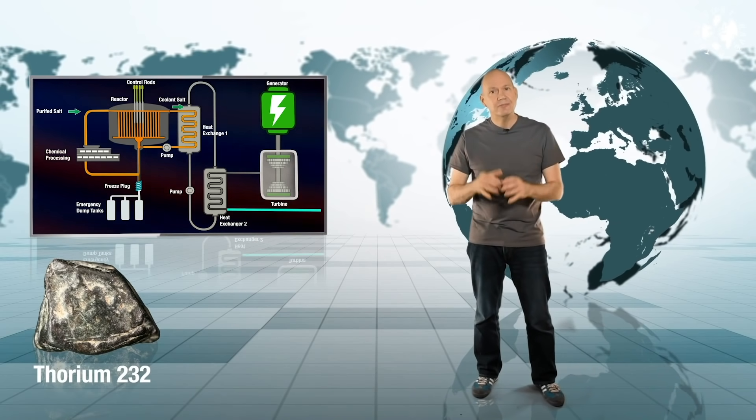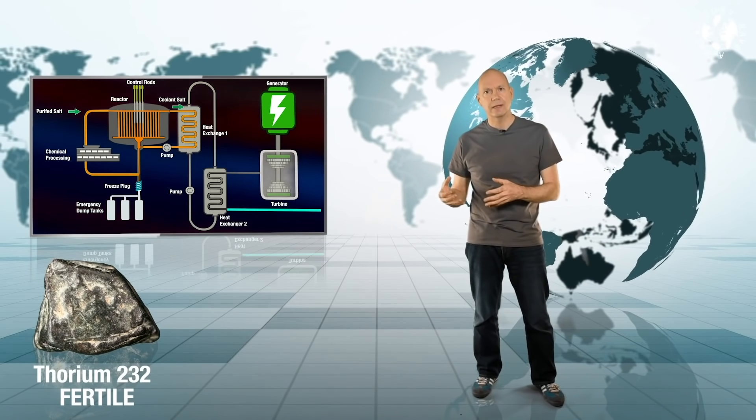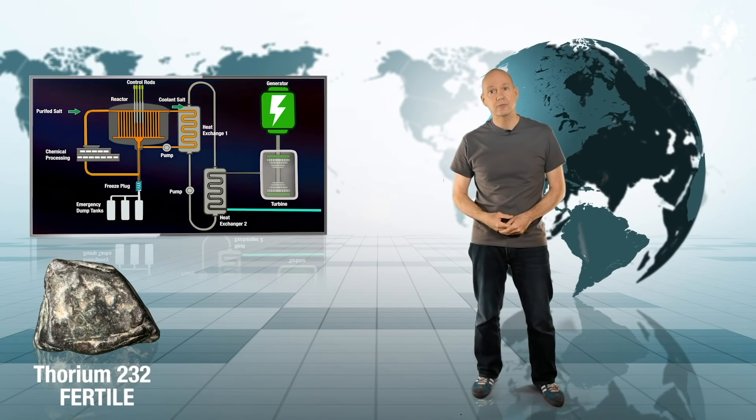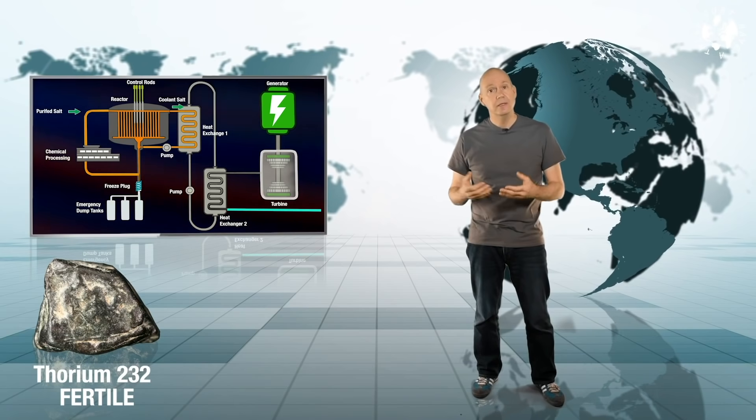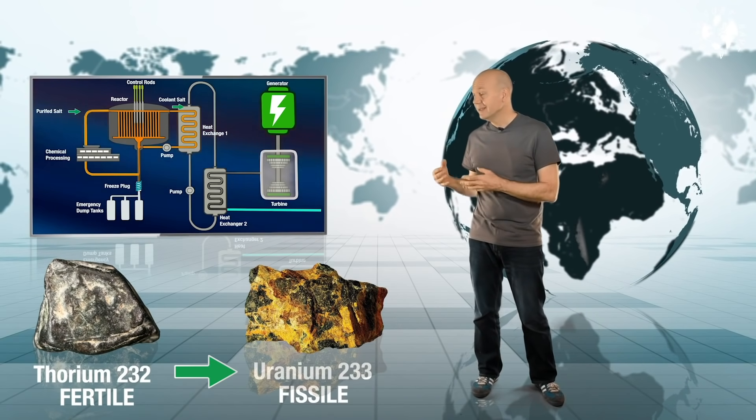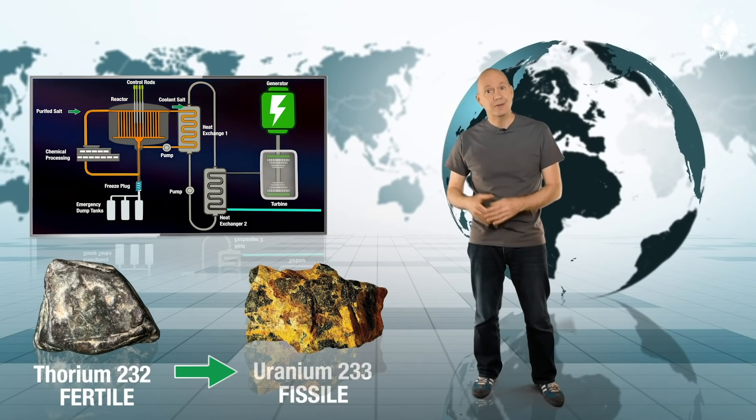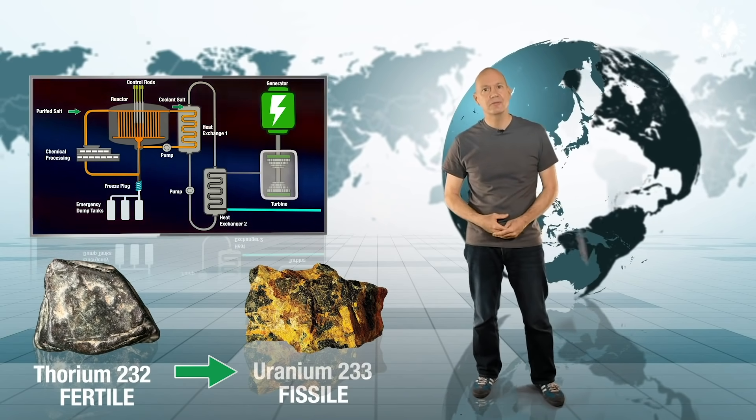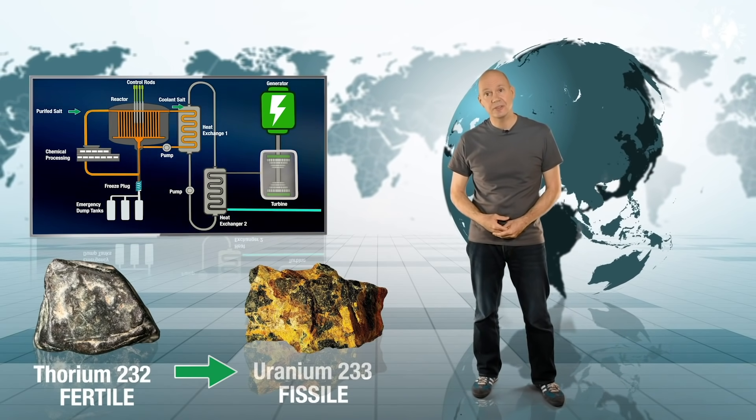Thorium is not fissile but it is fertile which means in a molten salt reactor it absorbs a neutron and goes through a series of reactions that transforms it into a fissile material, specifically an isotope of uranium called uranium-233. Uranium-233 splits very nicely, in fact when it splits it releases more neutrons than uranium-235 and that tends to make the chain reaction more efficient.